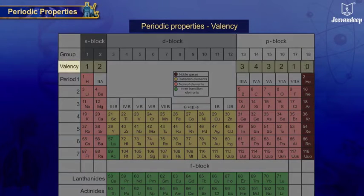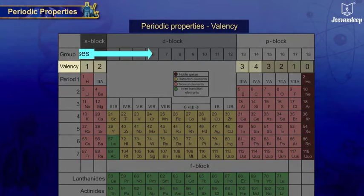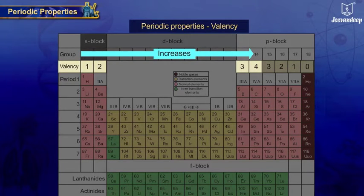Gradation of valency in a period: valency increases from one to four for the second and third period, and then decreases from four to zero when going from left to right in the periodic table.